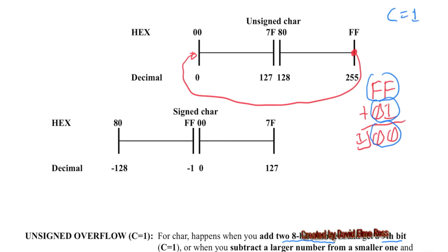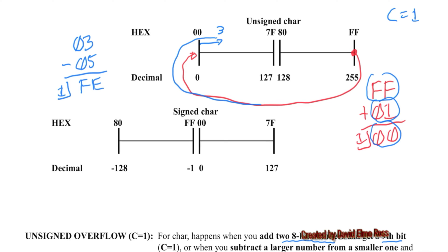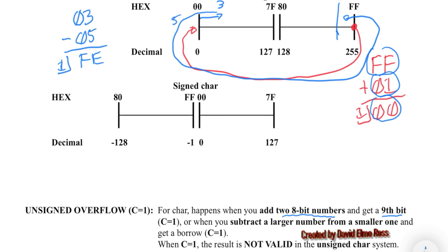For a simple subtraction, 03 subtract 05 gives a borrow because you're subtracting a larger number from a smaller number, and the result is FE. Visually, we went three units right, turned around, went five units left, and ended up at FE — an invalid result. So again C equals 1: any time we get a carry in addition or subtraction, the result is not valid — we've overflowed the unsigned number system.